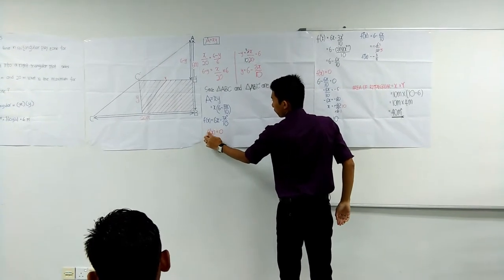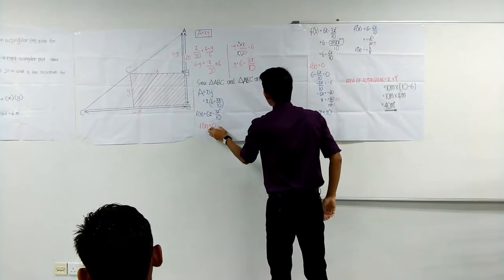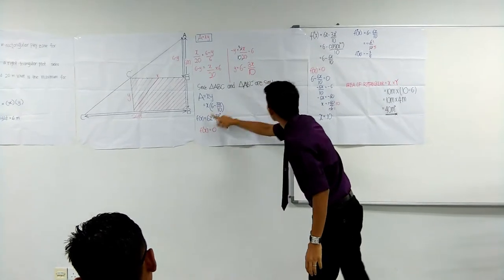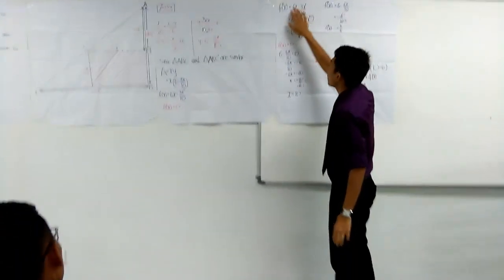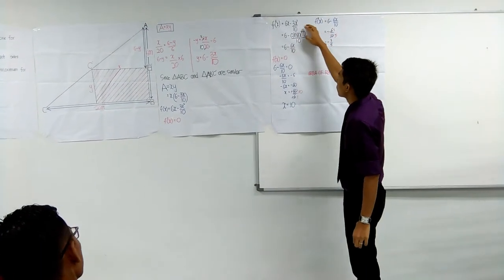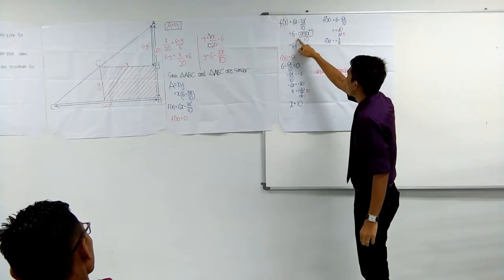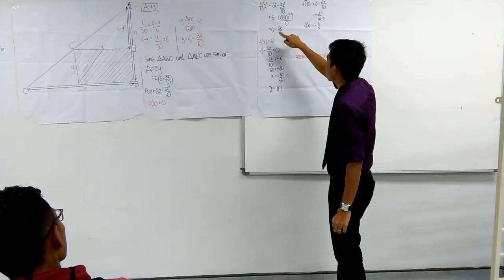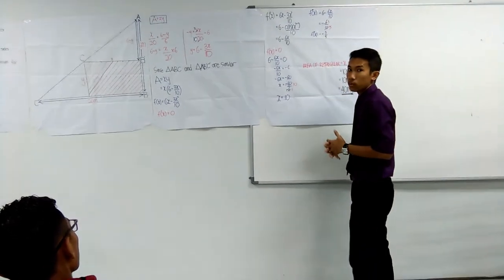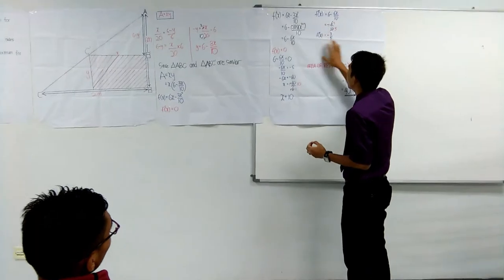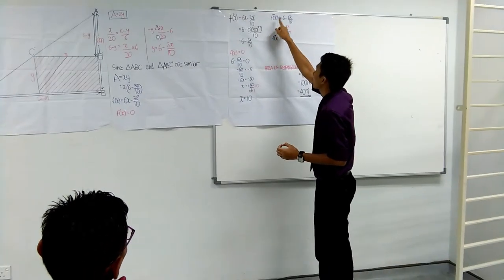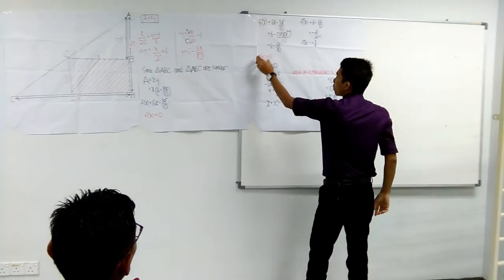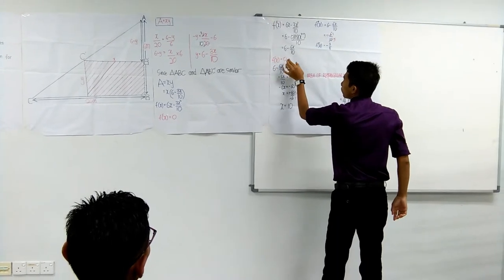This is A prime X equal to 0. We find this first. This is the A prime X of 6X minus 3X power 2 divided by 10. We got A prime X, we got 6 minus 6X over 10. And then we want to know also for the maximum, A double prime X.